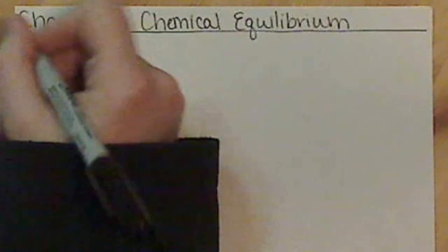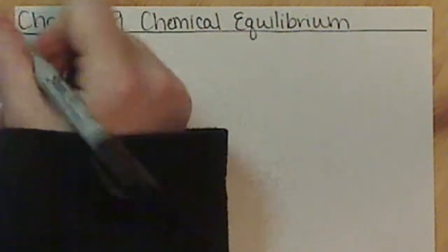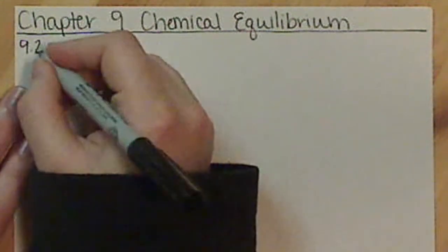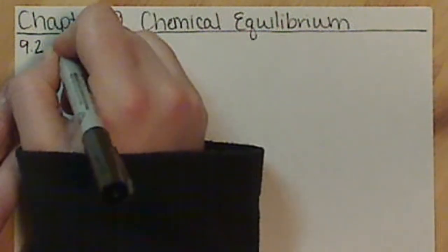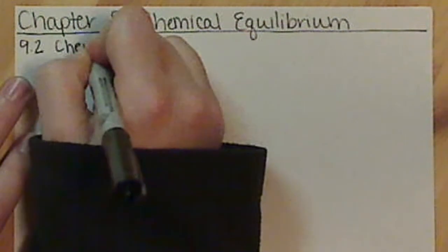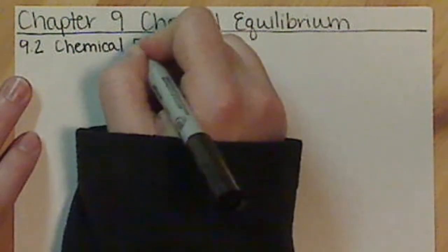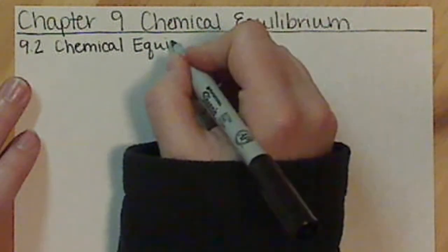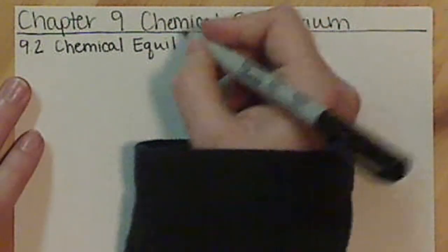Hopefully you've already watched the video from Ted Ed talking about rates of reactions and how to get chemical reactions to either speed up or slow down. In section 9.2, we're going to be looking at chemical equilibrium and applying the general concepts you learned in the Ted video towards what we call equilibrium.